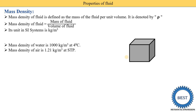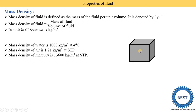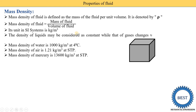Instead of air, if we fill mercury, then 13,600 kg of mercury fills the one meter cube tank, because the mass density of mercury is 13,600 kg per meter cube at standard temperature and pressure. So mercury has more density, and therefore more mass and more weight compared to water and air.